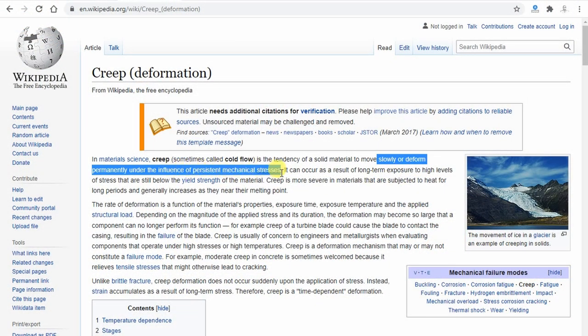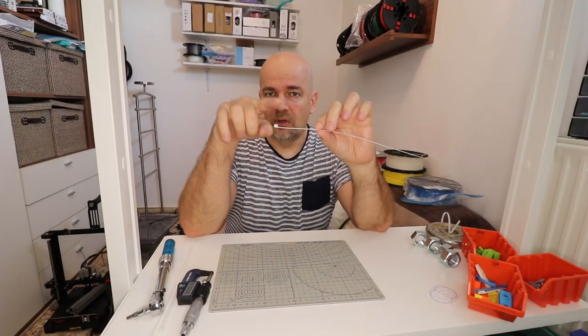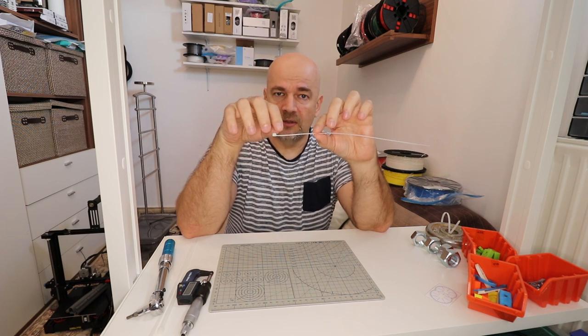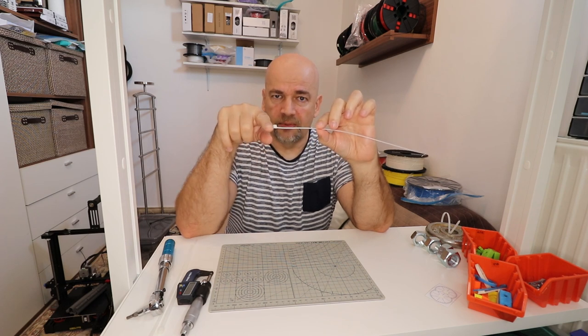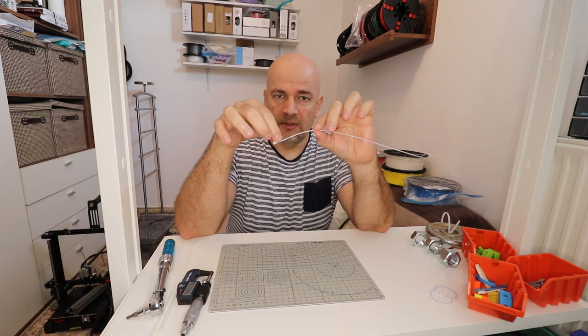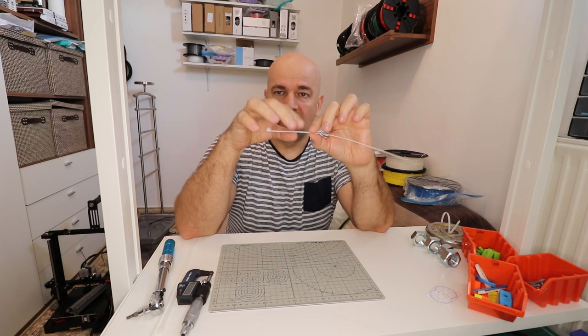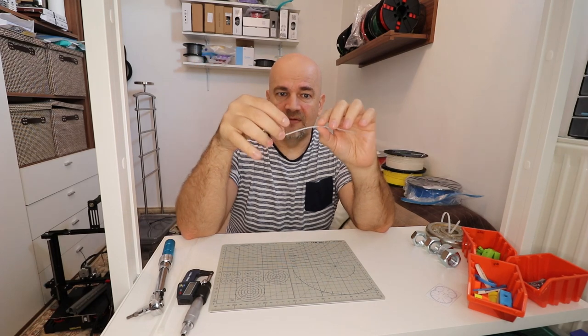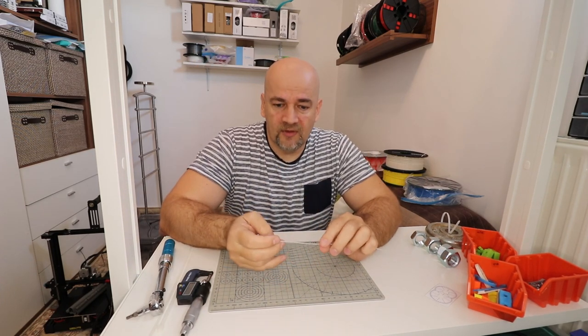It is also called cold flow. Imagine you have some object and put some very small load on it and it deforms just a little bit. Now if that load is below the yield stress, if you remove that load it will get the original shape. Now if you put back that load and leave it there permanently, in that case the object may permanently deform additionally and that is why it is important to understand this creep test with 3D printing plastic materials.